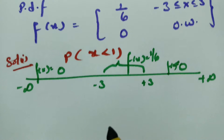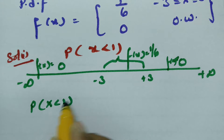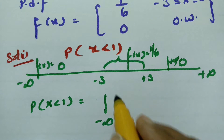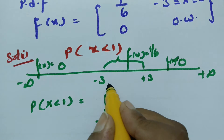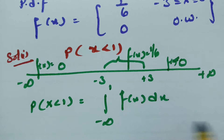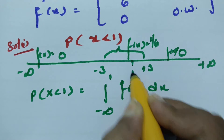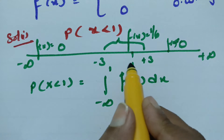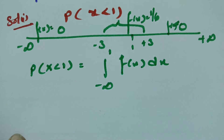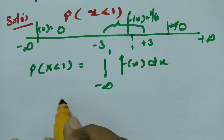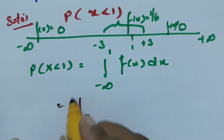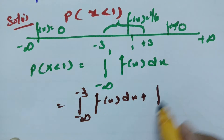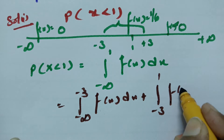We need P(X < 1), which is the integral from minus infinity to 1 of f(x) dx. Since 1 is between -3 and 3, we split this into two parts: from minus infinity to minus 3, and from minus 3 to 1. From minus infinity to minus 3, f(x) = 0.